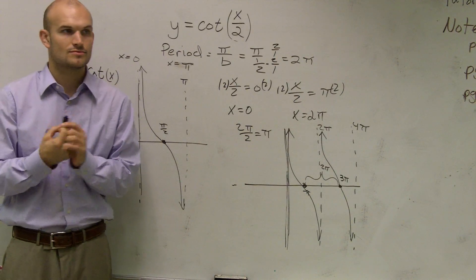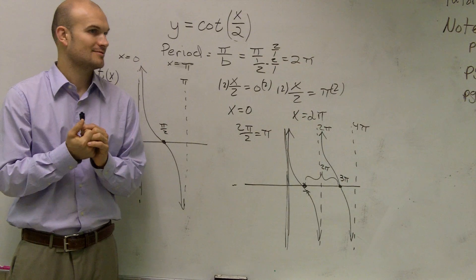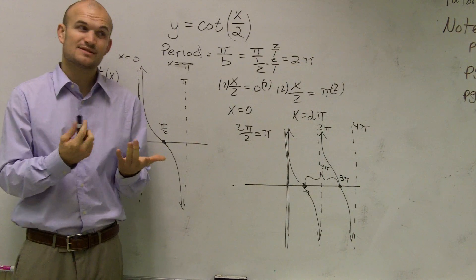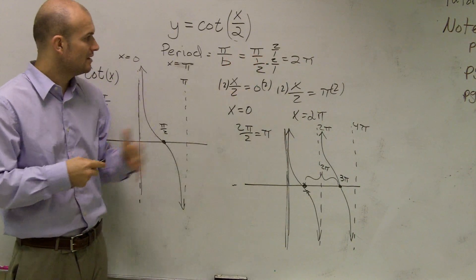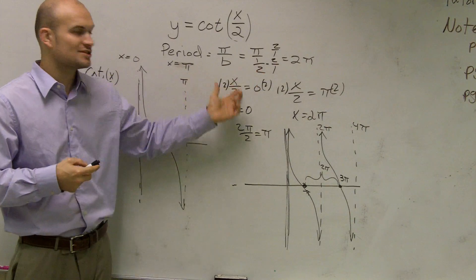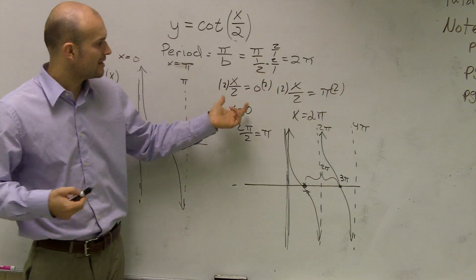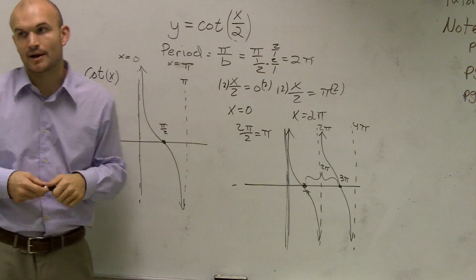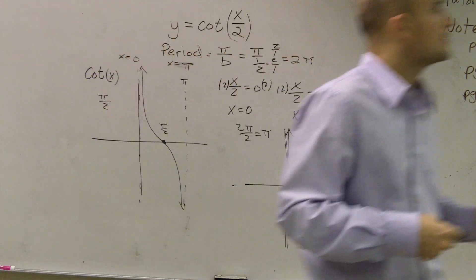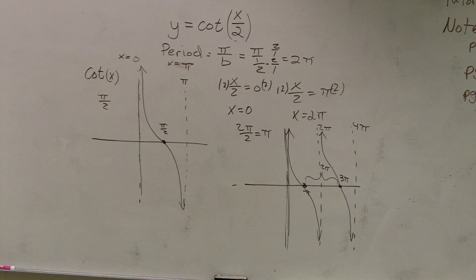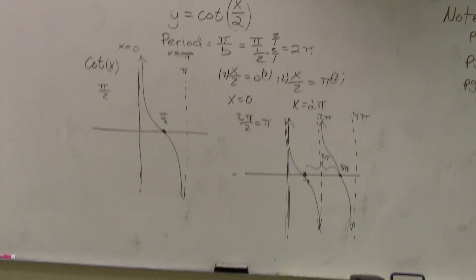Does anybody have any questions for the cotangent function? Anything you want to ask out loud? No? You kind of got an idea. It's just a little bit different than sine and cosine. The period's a little bit different, and the endpoints are different. Instead of 0 and 2π, now we're at 0 and π. All right, everybody seems to maybe understand that one.